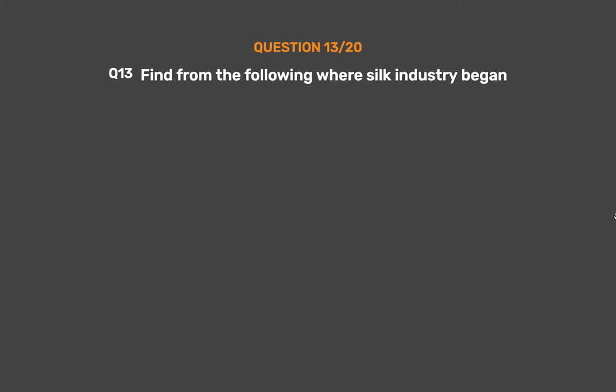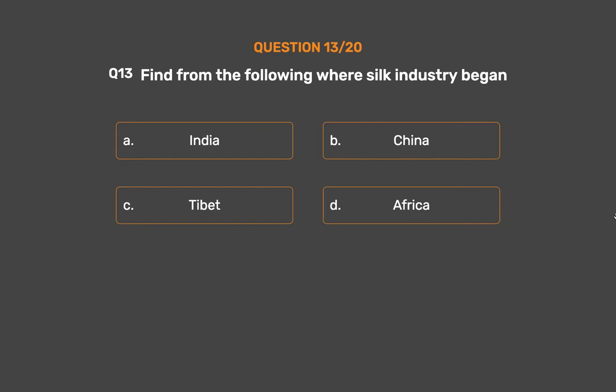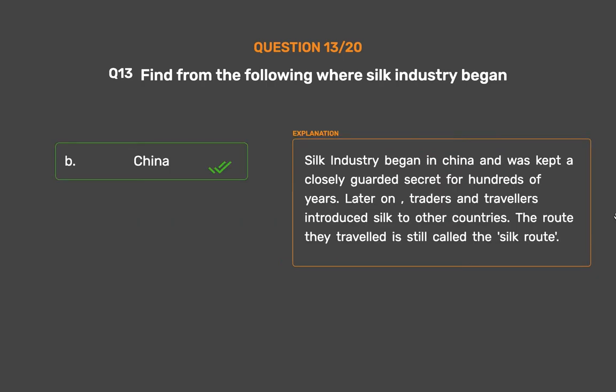Question No. 13. Find from the following where the silk industry began — Option A: India, Option B: China, Option C: Tibet, Option D: Africa. The correct answer is Option B: China. The silk industry began in China and was kept a closely guarded secret for hundreds of years. Later on, traders and travelers introduced silk to other countries. The route they traveled is still called the Silk Route.